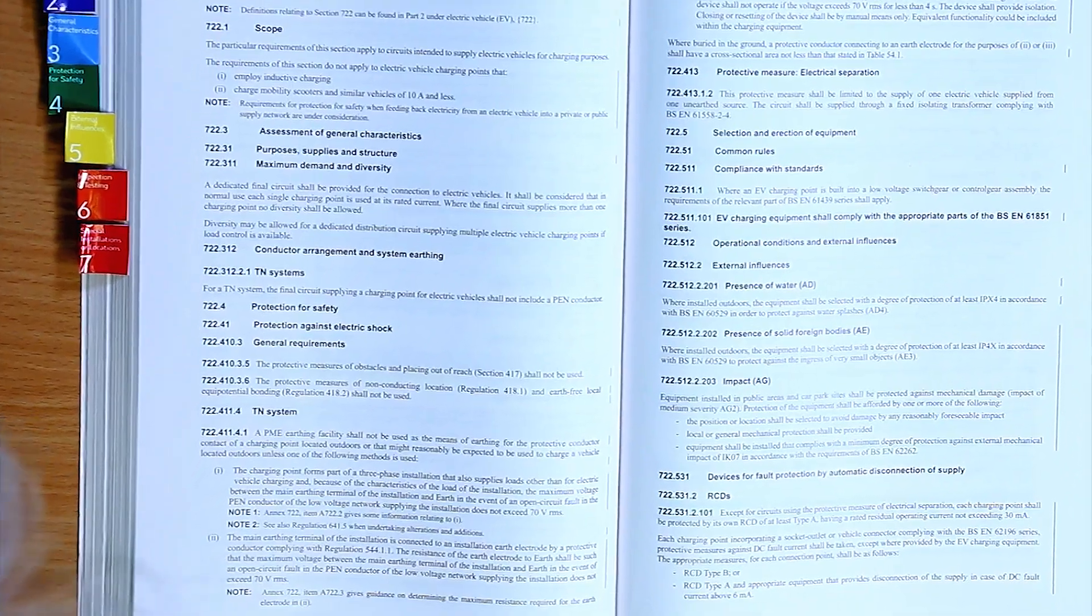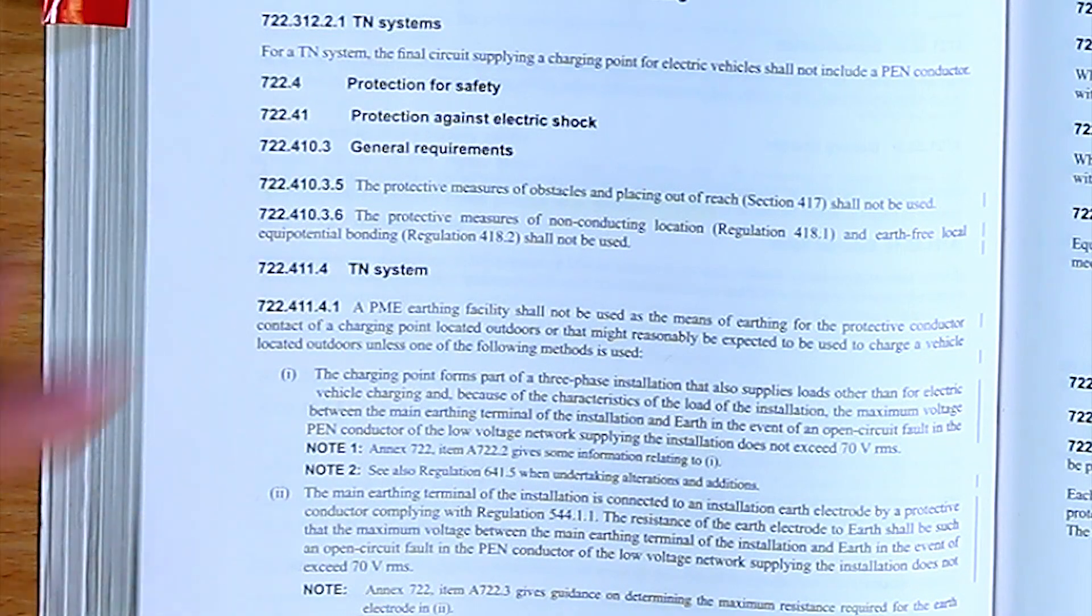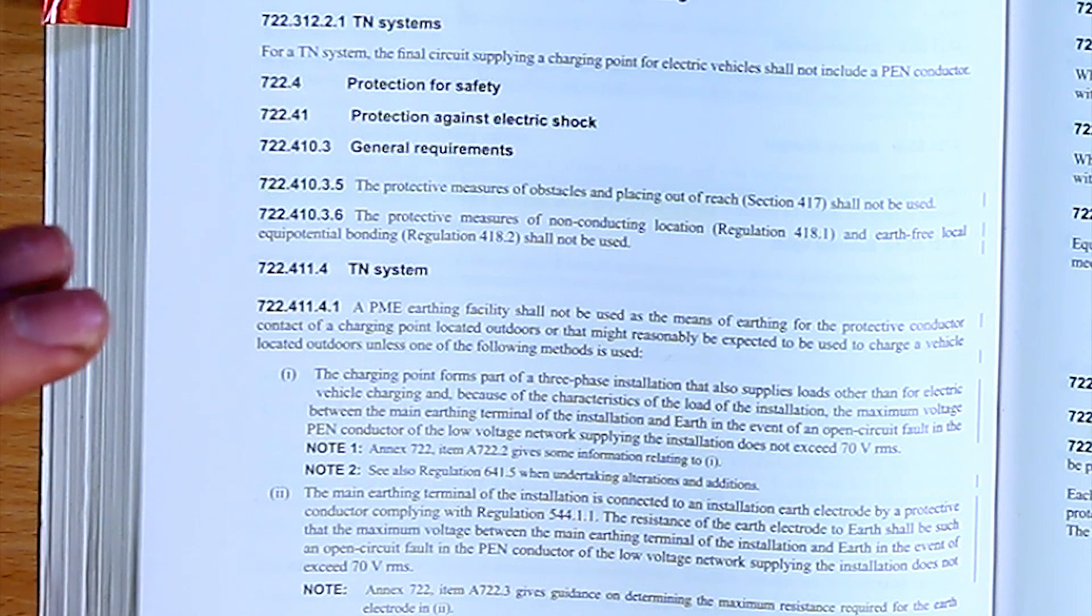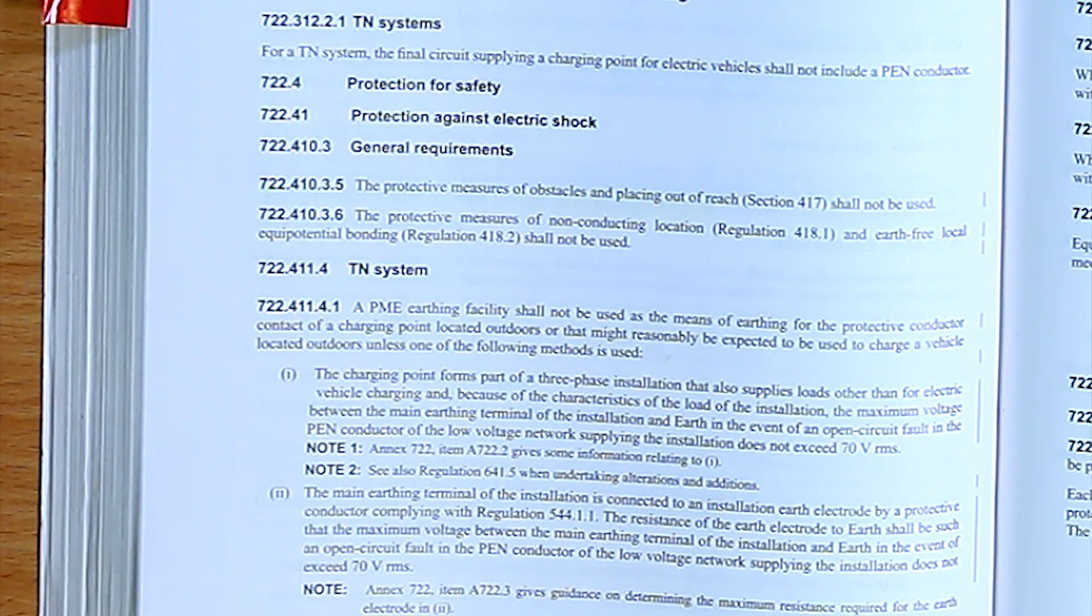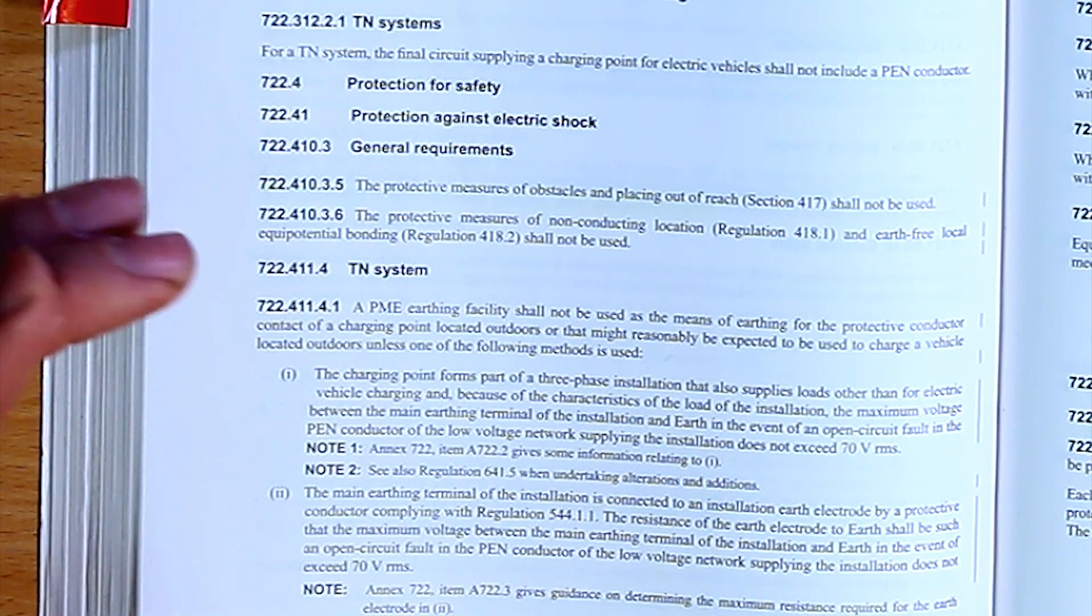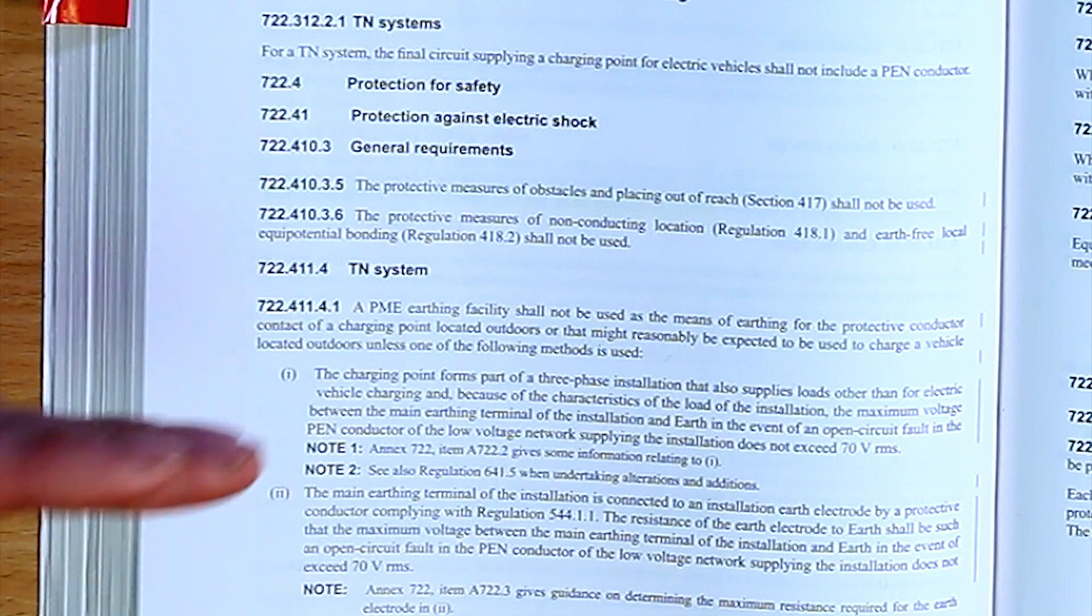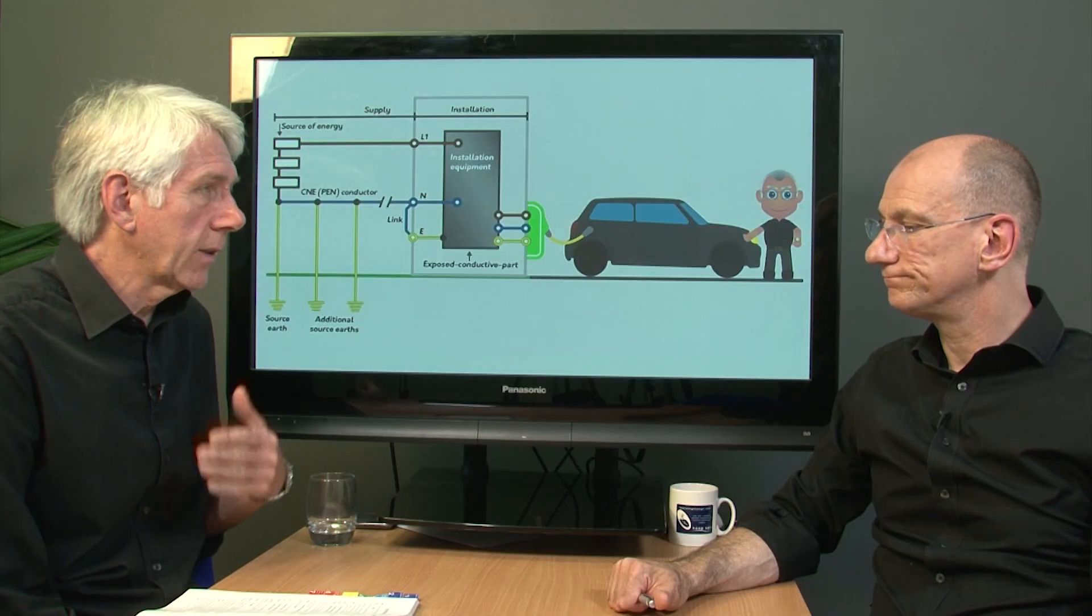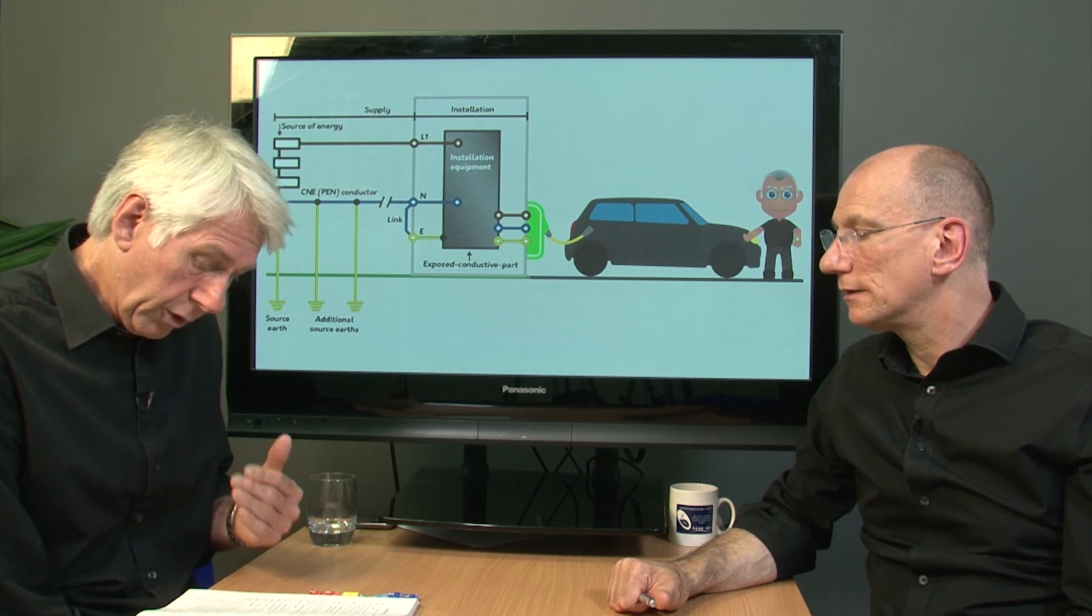And when we look to 722.411.4.1, it talks about that very situation in a TN system. A PME earthing facility shall not be used as a means of earthing for the protective conductor contact to the charging point located outdoors, although it might be reasonably expected to be used. And it gives us three options as effectively supplementary protection there, if we want to do that.